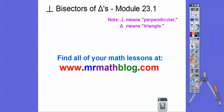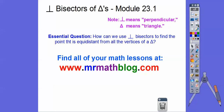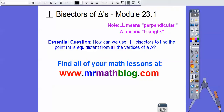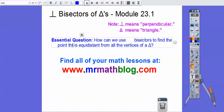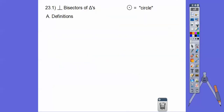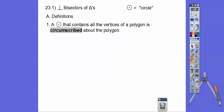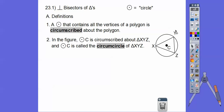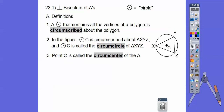Make sure this is an Integrated Math 1 link. Our question here is: how can we use perpendicular bisectors to find the point that is equidistant from all the vertices of a triangle? So some definitions — instead of writing out the word circle, we're going to draw a little circle with a dot in the middle so it doesn't look like the letter O or the number zero. A circle that contains all the vertices of a polygon is circumscribed about the polygon. So here we have circle C circumscribes triangle XYZ. Since this circle is circumscribing the triangle, it is called the circumcircle, and that point C is called the circumcenter.